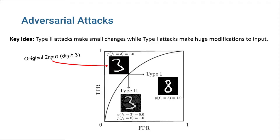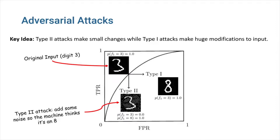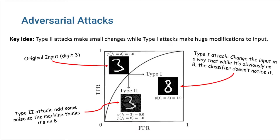Here is an example of type 1 and type 2 attacks on a digit classifier. In the type 2 attack, we simply add some noise to the input image, so that while it's obvious for a human that the digit is the same, the model classifies the noisy input as an 8. In the type 1 attack, we change the input digit drastically so that it will look like an 8 in a human's view, but we do this transition in a way that the model doesn't notice the difference and classifies the new input as a 3.